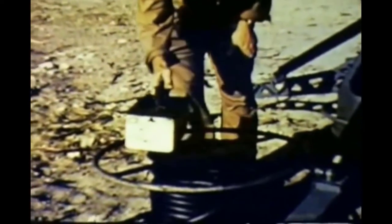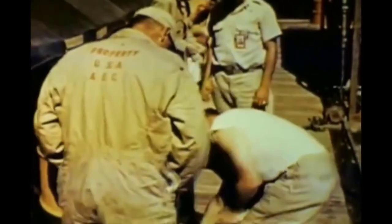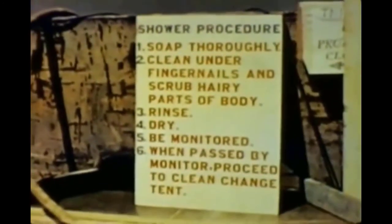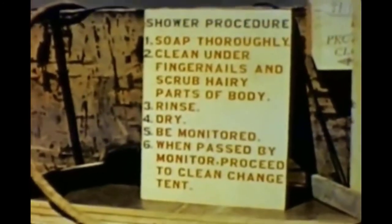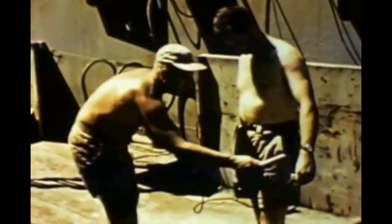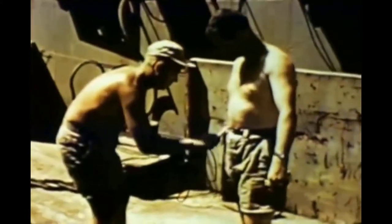The fallout was detected as far away as Australia, India, Japan, and North America. What happened at Castle Bravo led to an international call for a ban on the atmospheric testing of thermonuclear devices — all because of a miscalculation.